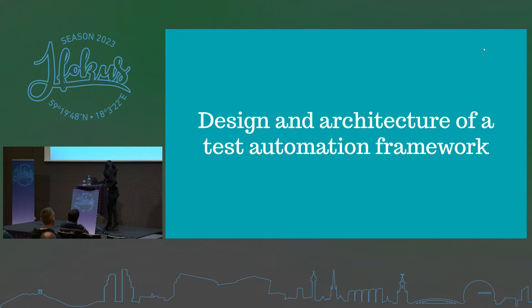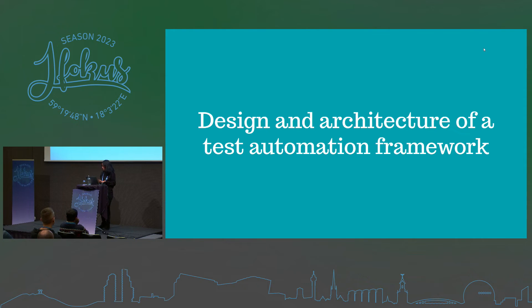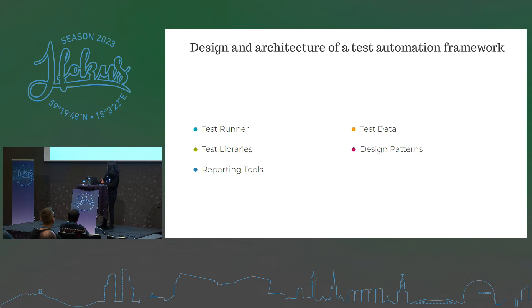Next up, I'll go through the design and architecture of a test automation framework. A well-designed test automation framework should be maintainable, scalable, and easily adaptable to changes in our project. The key points to remember for the design and architecture are: test runner, test libraries, reporting tools, testing tools, testing data, and design patterns.